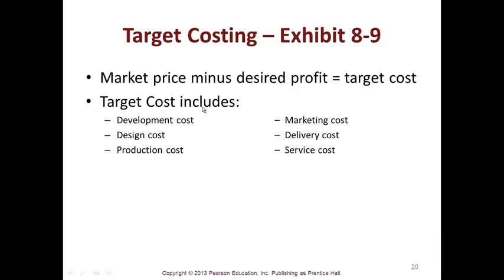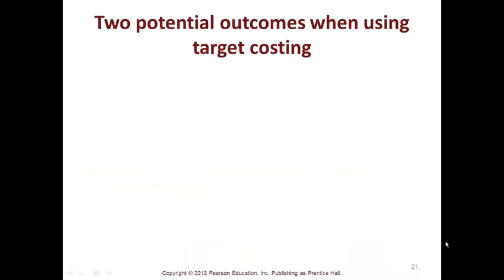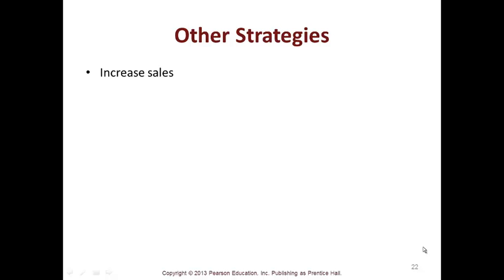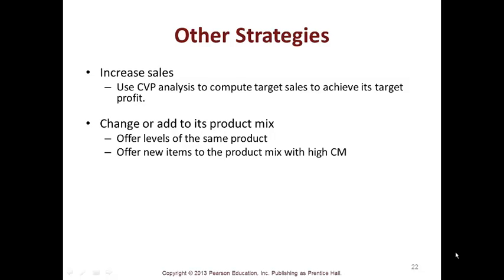Target cost includes all cost items — you have to cover them all. The calculation: revenue at market price times units, times $3, less your desired profit means your target cost is $6.50. Two potential outcomes when using target costing: actual cost less than target cost, or actual cost greater than target cost. Strategies include increasing sales using CVP analysis to compute target sales, or changing your product mix.